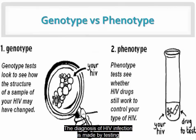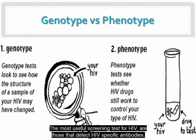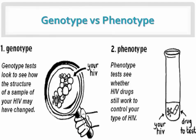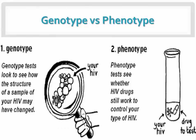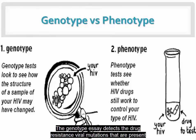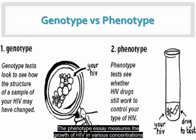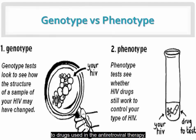The diagnosis of HIV infection is made by testing for HIV antibodies and antigens in the blood. The most useful screening tests for HIV are those that detect HIV-specific antibodies. The major problem is that there is a delay of about four weeks after infection before antibodies can be detected, creating a window period during which an infected individual may not test positive. The genotype assay detects drug-resistant viral mutations present in reverse transcriptase and protease genes. The phenotype assay measures the growth of HIV in various concentrations of antiretroviral drugs, much like bacteria antibiotic sensitivity tests. These are two types of resistance tests that can determine if a patient's HIV is resistant to drugs used in antiretroviral therapy.